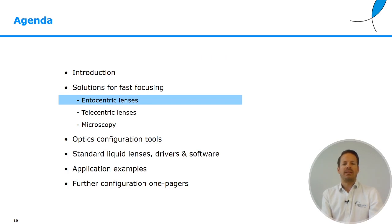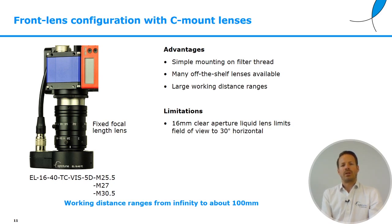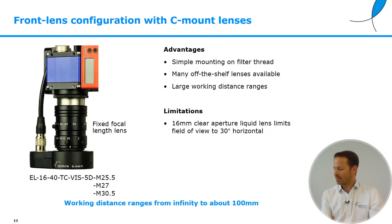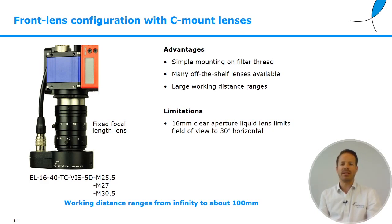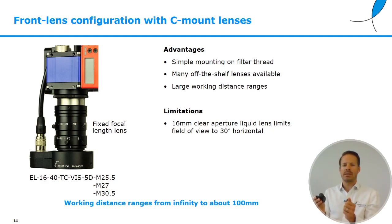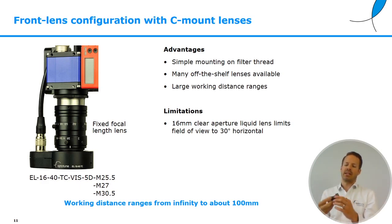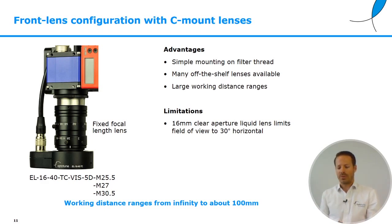Front lens configuration works well with C-mount lenses — probably the easiest approach, with many off-the-shelf lenses available. You just need to make sure your C-mount lens has a front filter thread, which is either M25.5, M27, or M30.5. A matching OptiTune lens with the correct thread can then be mounted on the filter thread. This will typically allow focusing from infinity up to about 100mm of working distance. The limitation is an aperture size of 16mm, which limits the field of view to roughly 30 degrees horizontal.